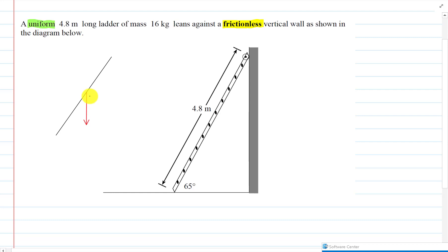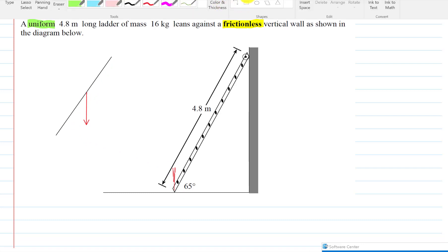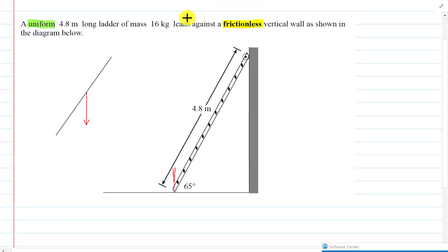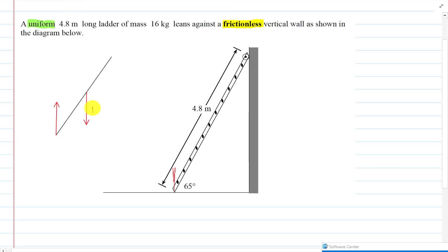What other forces are there? Well, the ground is pushing up on it, and a force applied from a surface to an object is called the normal force. So we label this the force of gravity of the ladder, and this is the normal force.